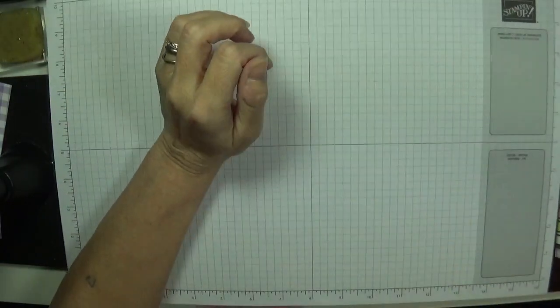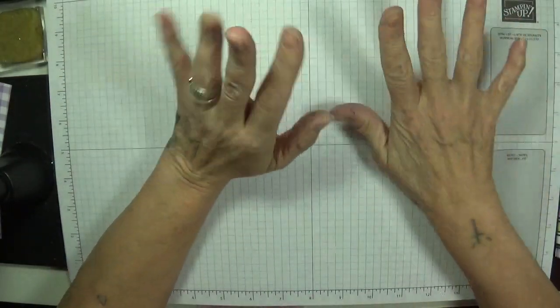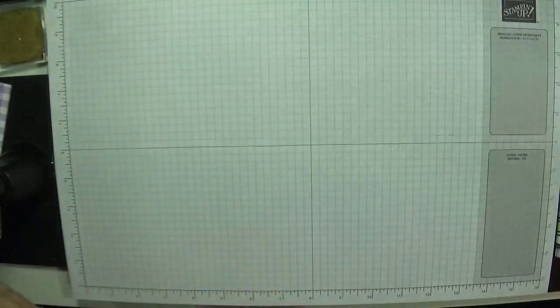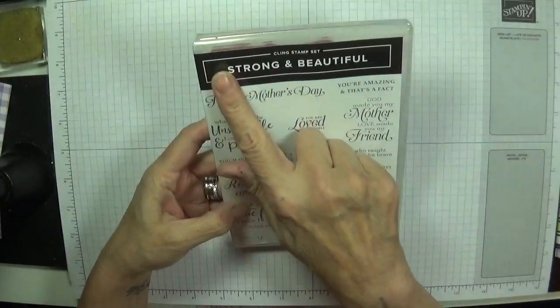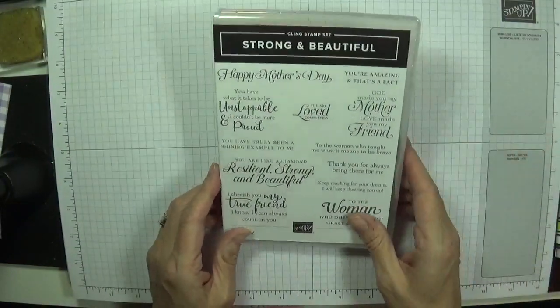Hey Stampers, it's Gainer again. Excuse me, a bit of a frog in my throat there. The next one in my alphabetical order is this. It's called Strong and Beautiful and again it's a sentiment stamp.